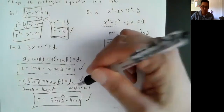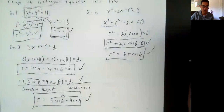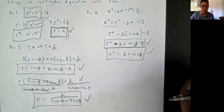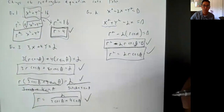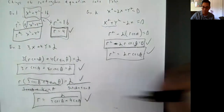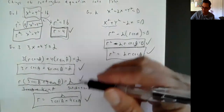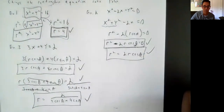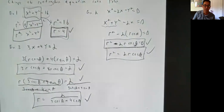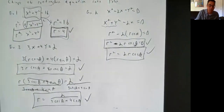All three forms are equivalent, so there's quite a variety. If you're working on a test and you don't see your exact answer, realize that what you got may be equivalent to one of the options — chances are it will be. There are lots of other examples online. Good luck.